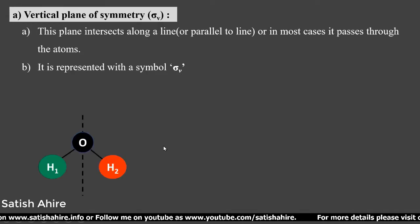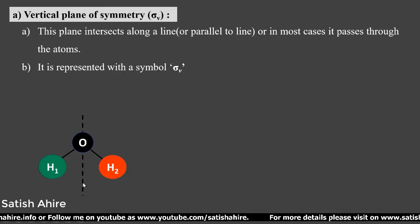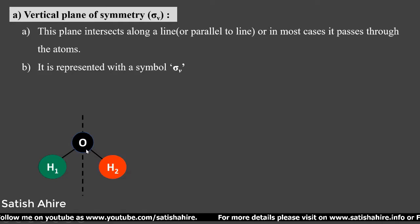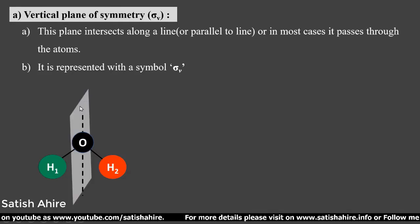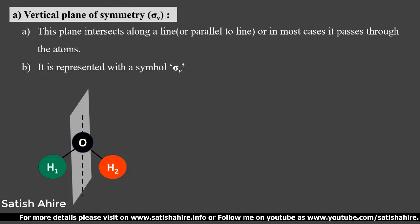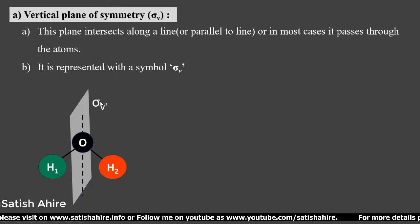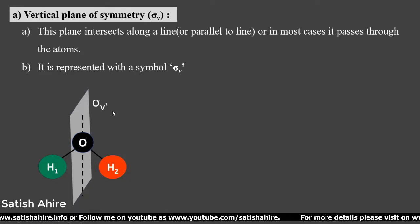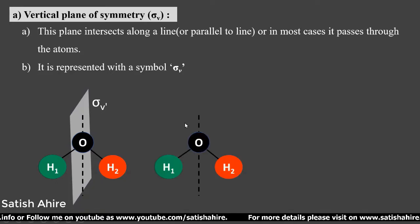If we consider the example of a water molecule, this black line represents the presence of a C2 axis that passes through the oxygen atom. If we pass a plane through this oxygen atom, this plane divides the molecule into two equal parts that are mirror images of each other. This is the first plane of symmetry, represented with σv prime.